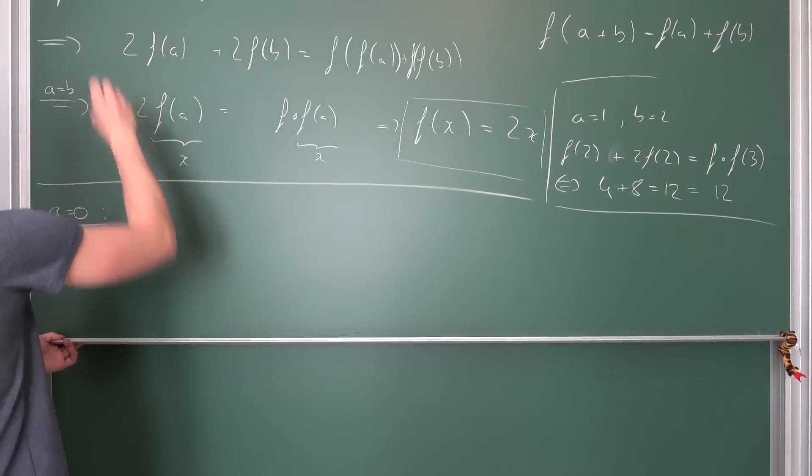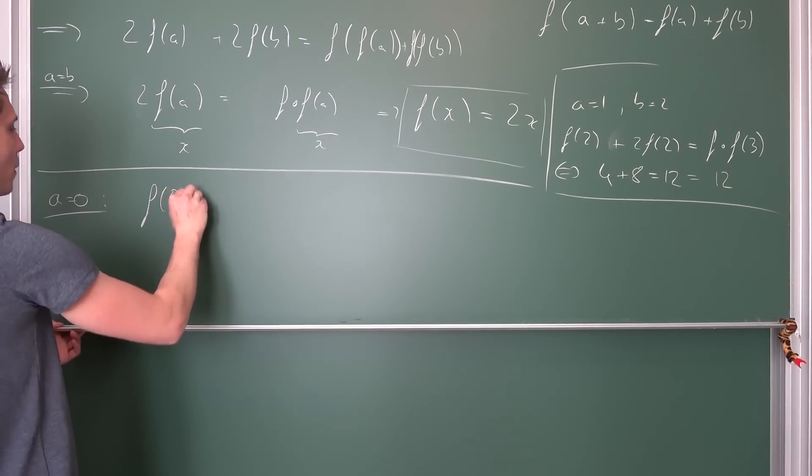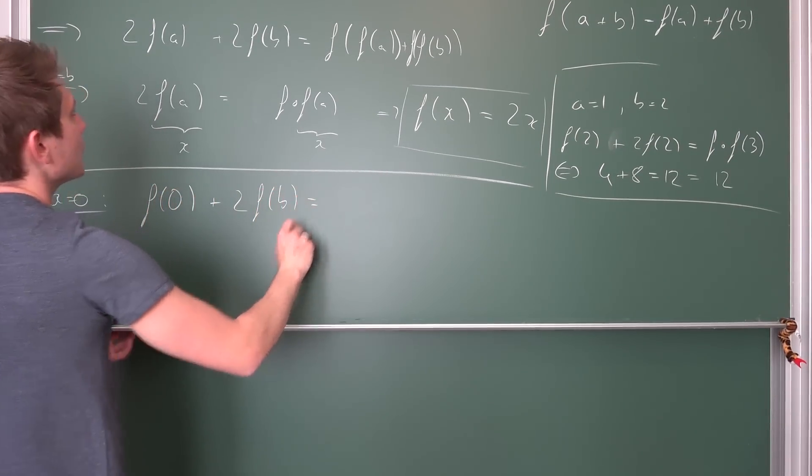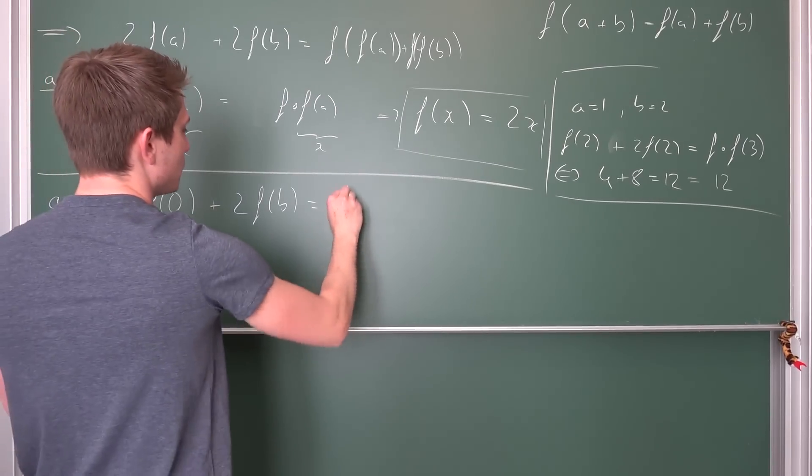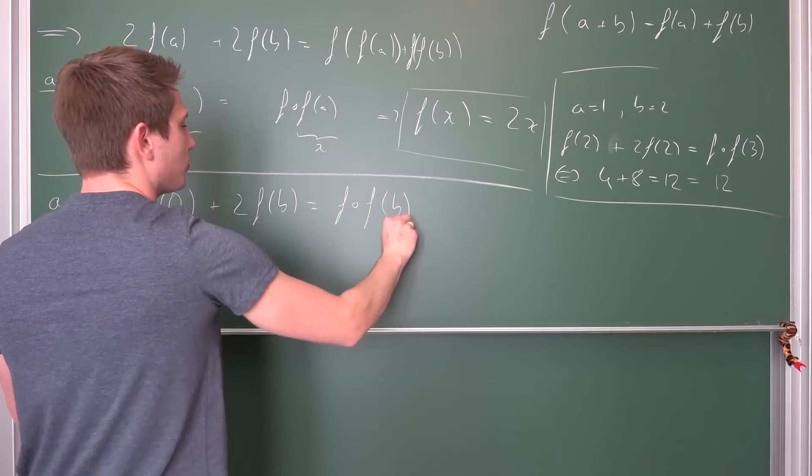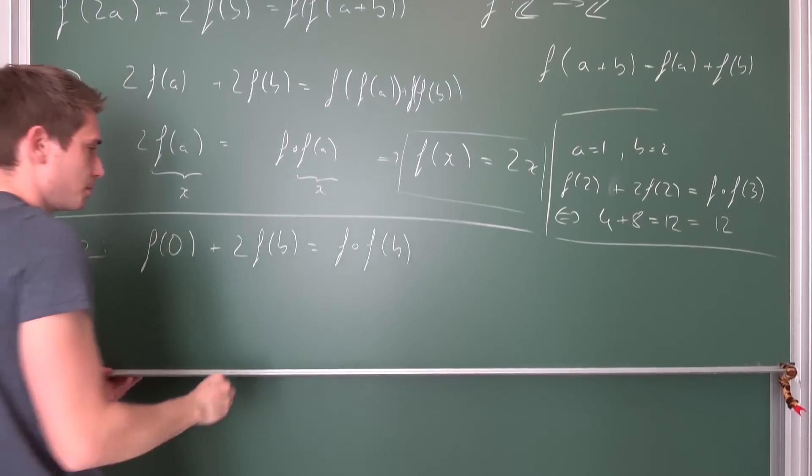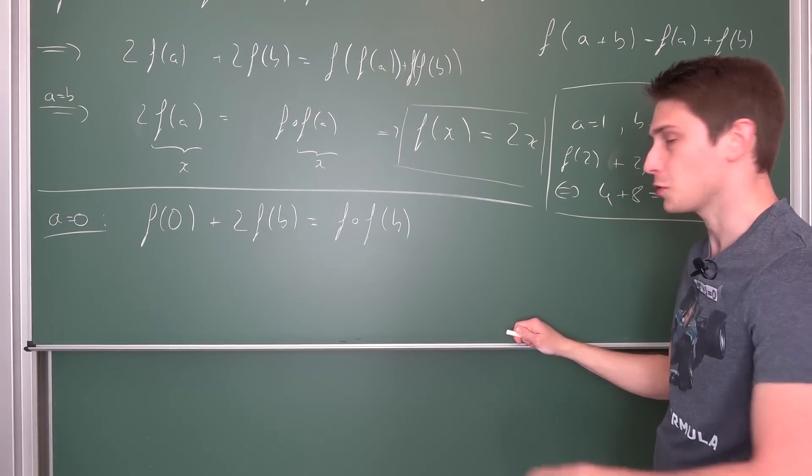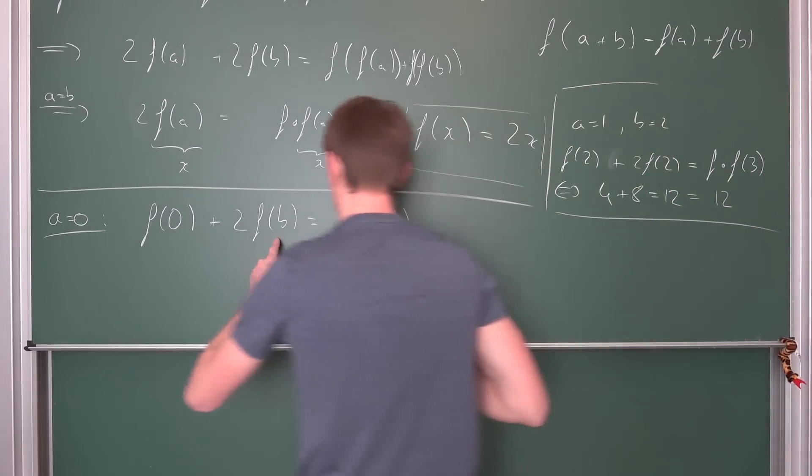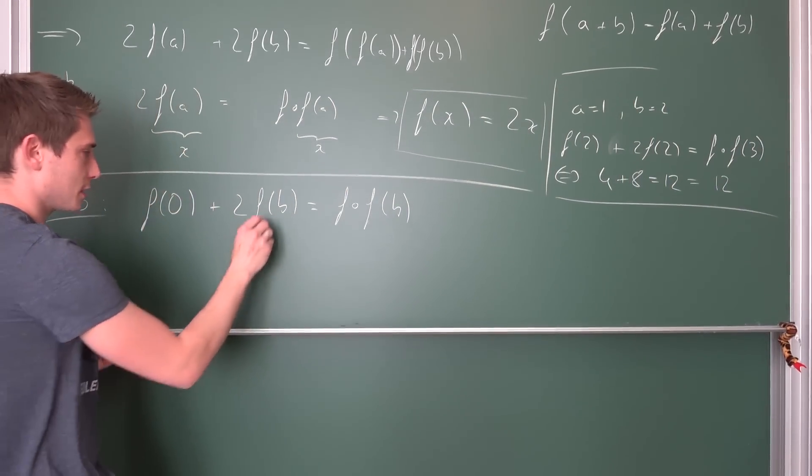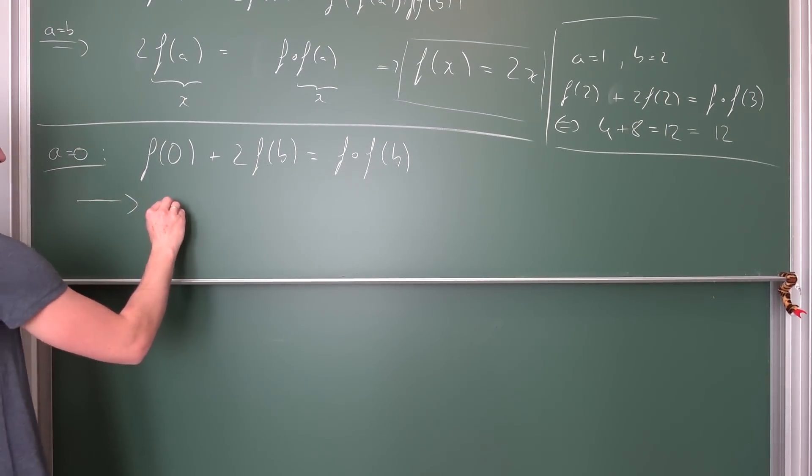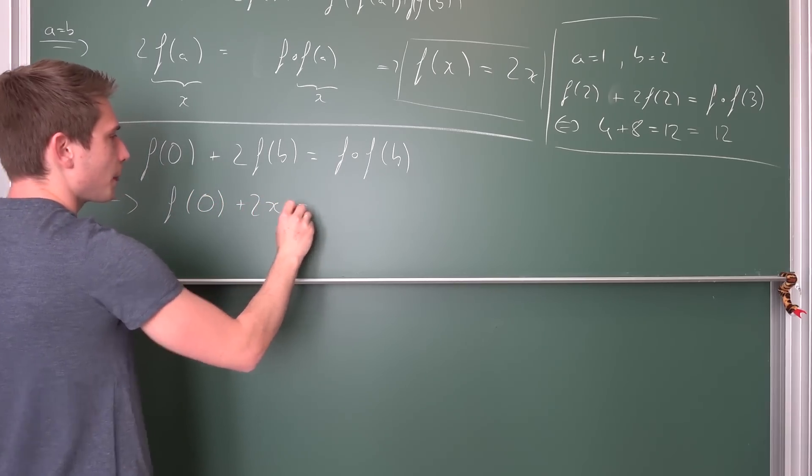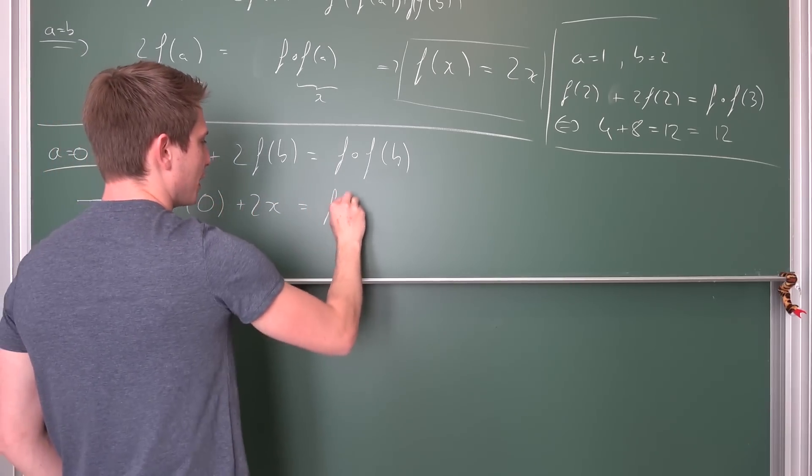Let's say a is equal to zero. Then we are going to get f(0) + 2f(b) is equal to f of f(b). Zero plus b is just b. Same situation as before, f(b) is a positive or negative integer, so this is our x value. Basically, we are going to get f(0) + 2x is equal to f(x).